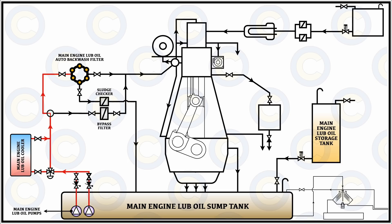Once the oil has passed through this system, it will go into the distribution manifold. From the common manifold, the oil will go to a number of places and lubricate the different bearings and parts of the main engine — for example, the crank pin side, the crosshead side, as well as the main bearing side. In different constructions, sometimes there might be a telescopic pipe or sometimes an articulate arm, depending on whether the engine is of MAN B&W or Sulzer design, with similar designs by other manufacturers such as Mitsubishi.